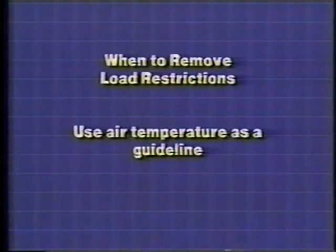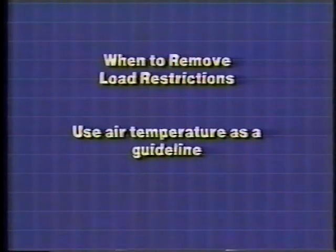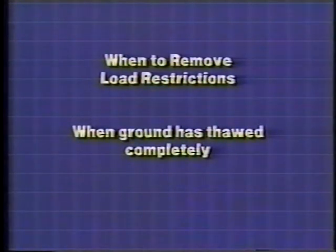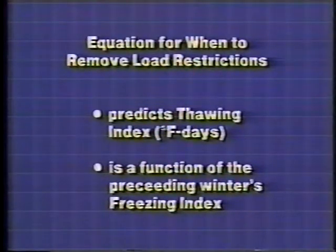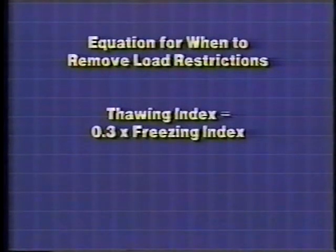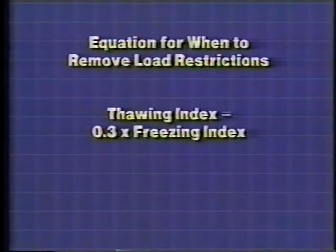When to remove load restrictions is site-specific and difficult to estimate. Probably the most accurate method is measuring pavement surface deflections, but a straightforward and less expensive technique is the use of air temperatures. The guidelines assume the critical period ends and load restrictions may be removed when the ground has thawed completely. The primary equation predicts when the pavement will have thawed completely: the thawing index required equals 0.3 times the freezing index.